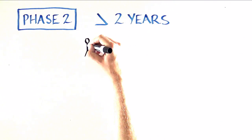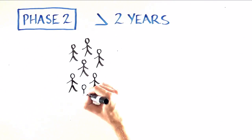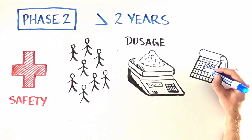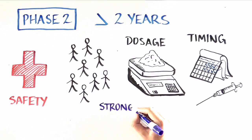Phase 2 trials, which can last longer than two years, will confirm the safety in a larger group of volunteers, and focus on the best dose and the best timing of vaccinations to produce the strongest immune response.